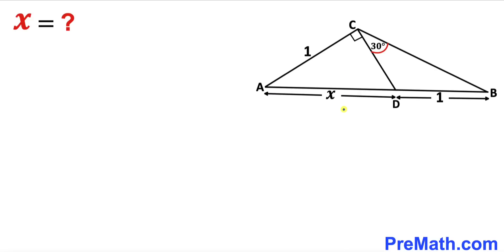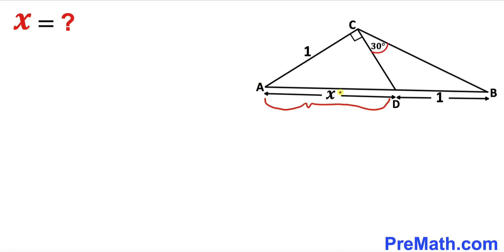Welcome to PreMath. In this video we have a triangle ABC that consists of two triangles. One of them is a right triangle ACD, whereas the angle BCD is 30 degrees in the other triangle. The side length AC equals side length BD, and both of them are 1 unit each. This distance AD is X units, and we are going to calculate this distance X.